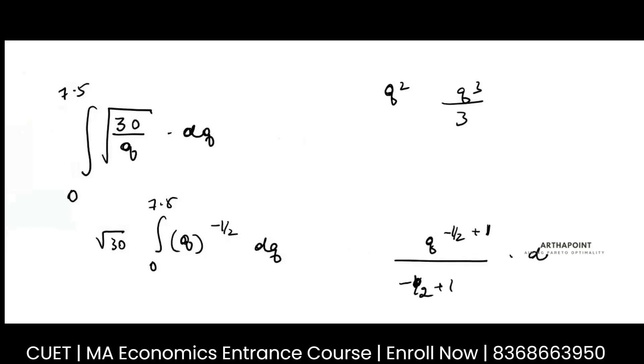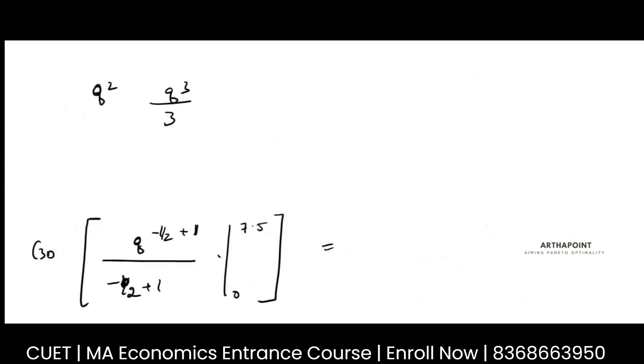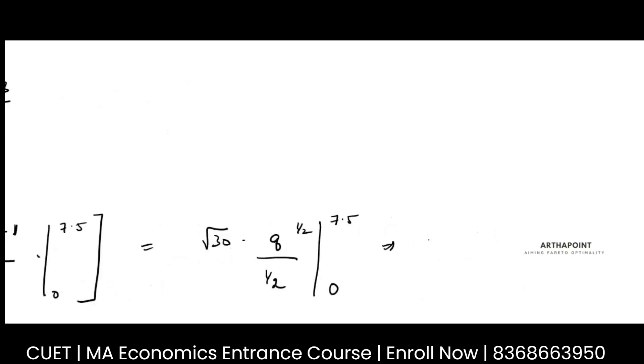So integration of this will be Q to the power minus half plus 1 upon minus half plus 1. And this will be integrated from 0 to 7.5 into root 30. So this will be root 30 Q to the power half upon half. Put this from 0 to 7.5. So this will be 2 root 30 into root 7.5.